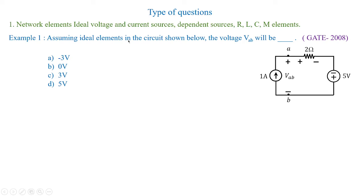Example one: assuming ideal elements in the circuit shown below, we have to obtain the voltage VAB. The options are minus 3, 0, 3, and 5 volts. This question was asked in Gate 2008 for the electrical paper and it was a two-mark problem. At the time it was a typical question, but according to current gate patterns it is now a very easy problem.